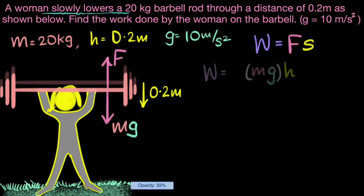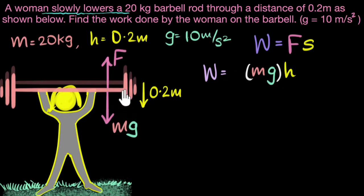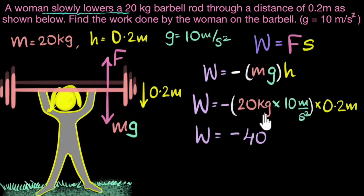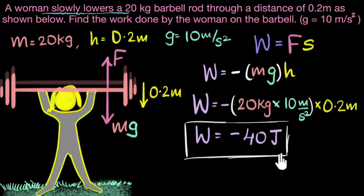Since her force equals weight for most of the motion, work done is mg times h. But is it positive or negative? Her push is upwards and the displacement is downwards — they are in opposite directions, so the work done is negative. Substituting: 20 times 10 times 0.2 — that's 20 times 2 equals 40. So the answer is negative 40 joules. The work done by the woman on the barbell is negative 40 joules.